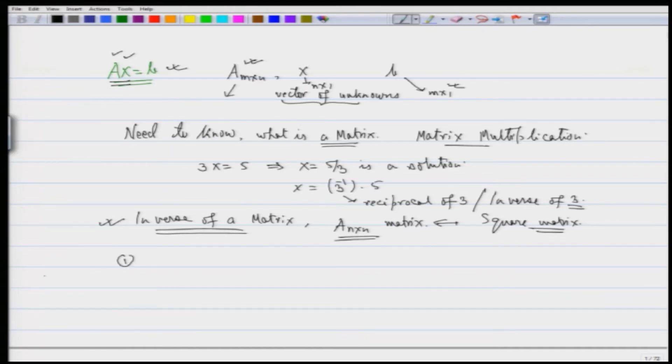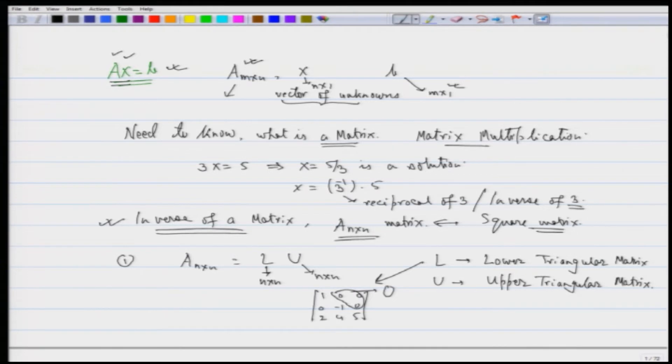what is called a matrix A being written as L times U, where L is a n cross n matrix, U is also an n cross n matrix, but then there are some special properties. L is called a lower triangular matrix and U is called an upper triangular matrix. For example, L, the matrix looks like, lower I am saying, it will look like 1 0 0 0 minus 1 0 2 4 5. The upper part is nothing, but it consists of 0 0 0 0 7 0 0 1 minus 1 1 minus 1 0 0 0 2.